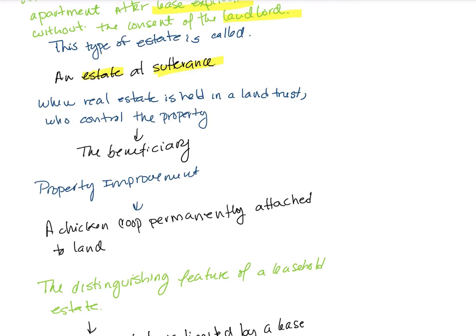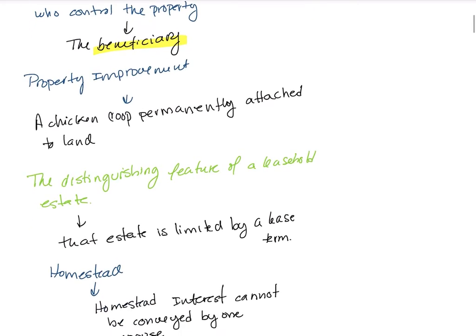When real estate is held in a land trust, it is the beneficiary who controls the property. As for property improvements, anything that is permanently attached to land is considered a property improvement.